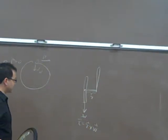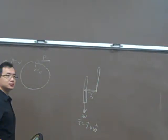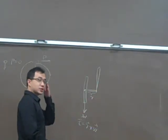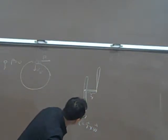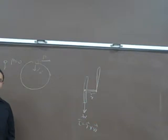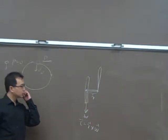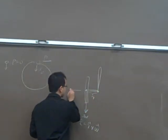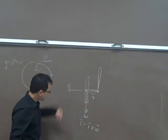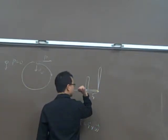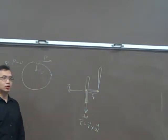You can determine the direction of this torque using the right-hand rule. R cross W — what is the direction of R? This is the rotational center, so this is R. And the force is downwards. So R cross W gives you a torque in this direction.